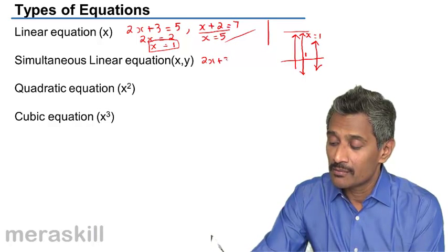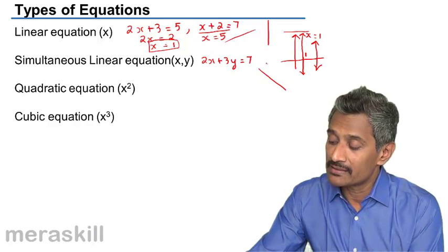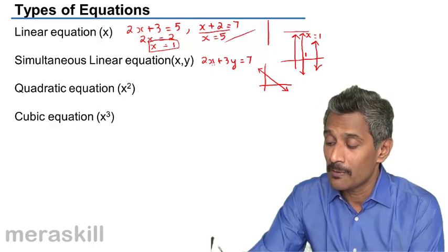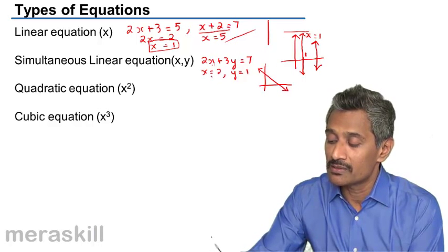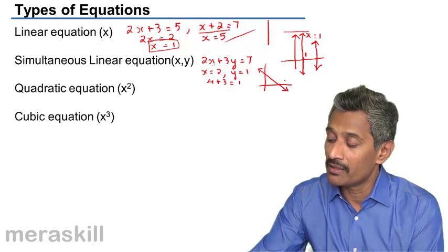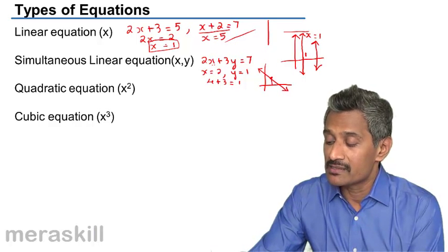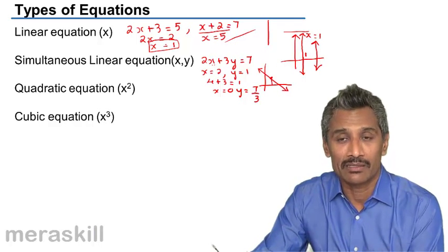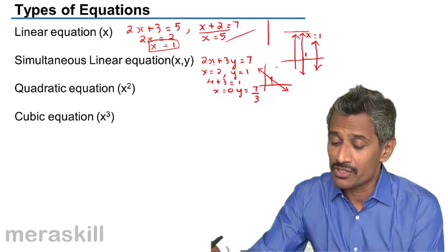This is a linear equation. Now suppose you have a simultaneous linear equation: 2x plus 3y equals 7. If you plot this, you get a line cutting the x and y axes. For example, x equals 2 and y equals 1 satisfies it: 4 plus 3 equals 7. Taking x as 0 gives y as 7 by 3, so the line passes through 0 comma 7/3.